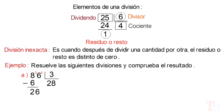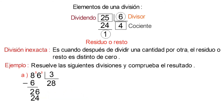Eso nos daría 24. Restando ambos valores, nos quedaría como resultado 2. Como este valor es menor que el divisor y no hay más cifras en el dividendo que seleccionar, entonces la división concluye en este paso.